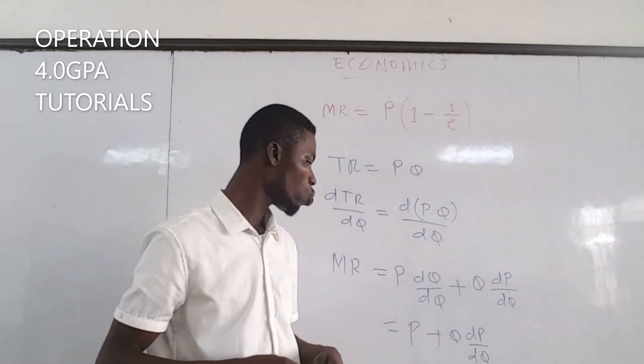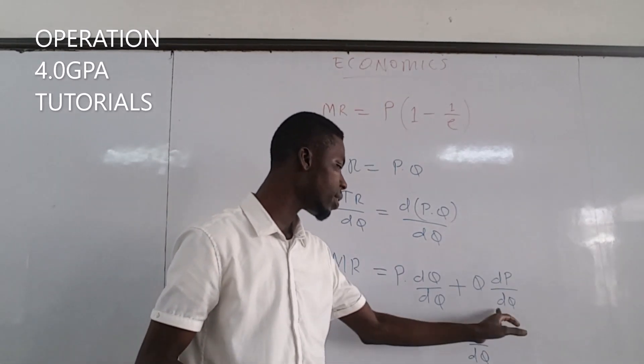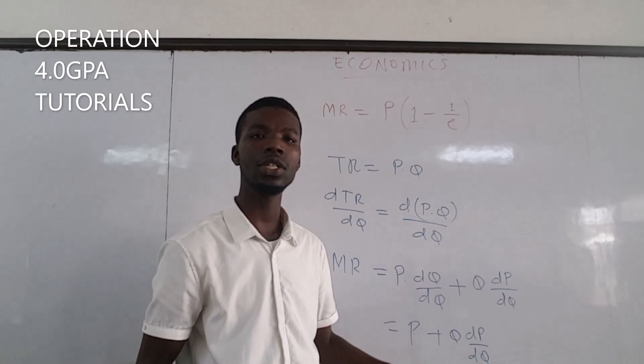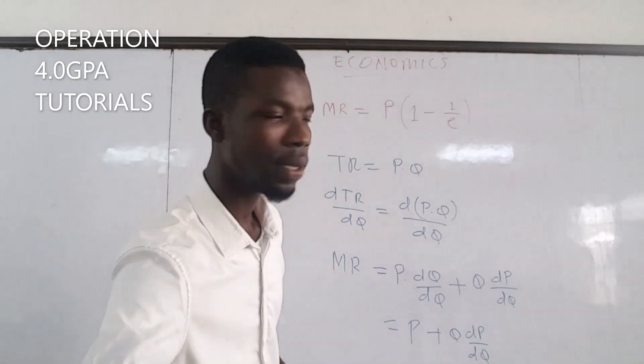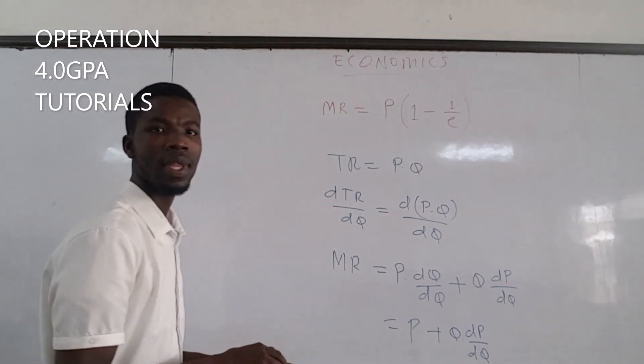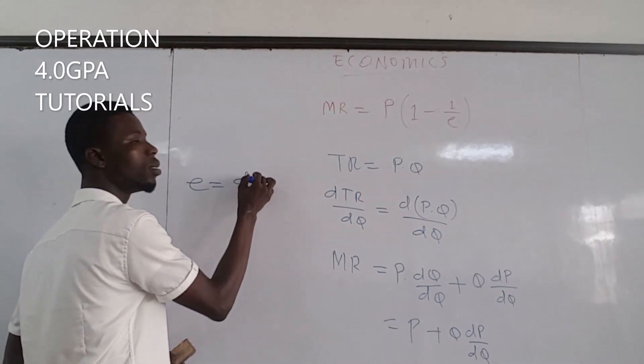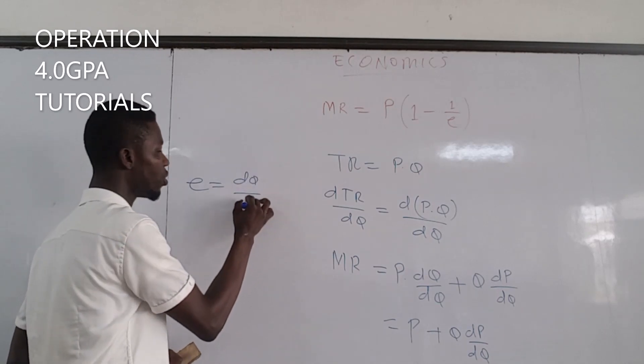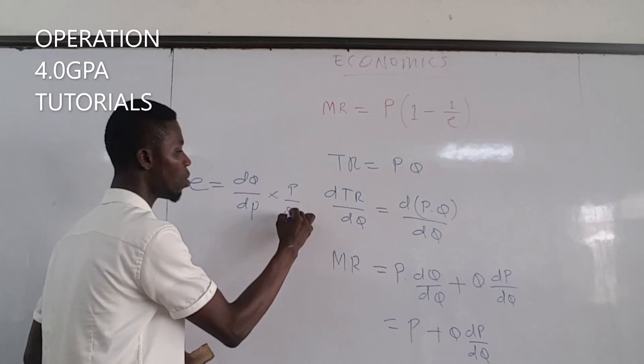Now with what we have, we can see that marginal revenue equals price plus quantity times change in P over change in Q. We also know that elasticity is change in quantity over change in price times price over quantity.